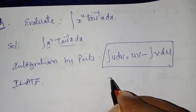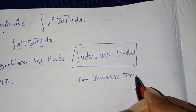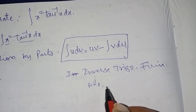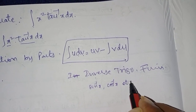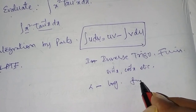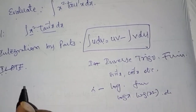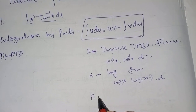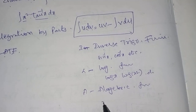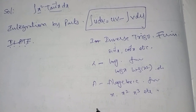What is ILATE? I means inverse trigonometric functions — we know that inverse trigonometric functions are like sin⁻¹x, cos⁻¹x, etc. L means logarithmic functions, such as log x, log(x²), etc. A means algebraic functions, that is x, x², x³, etc.